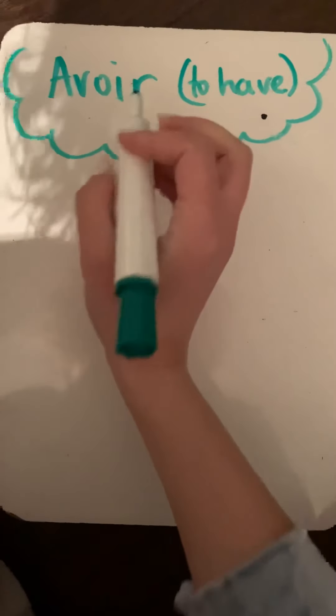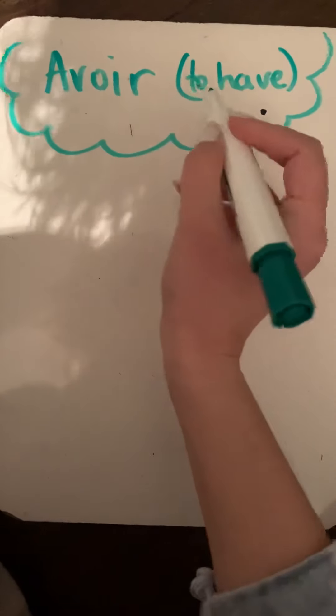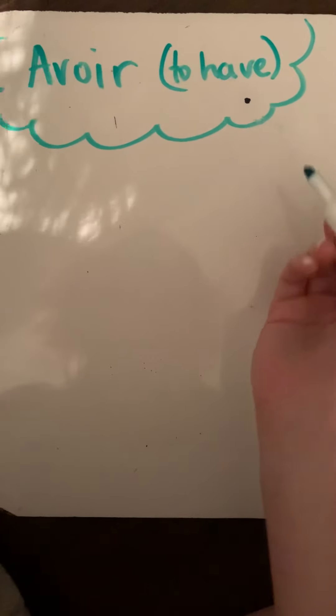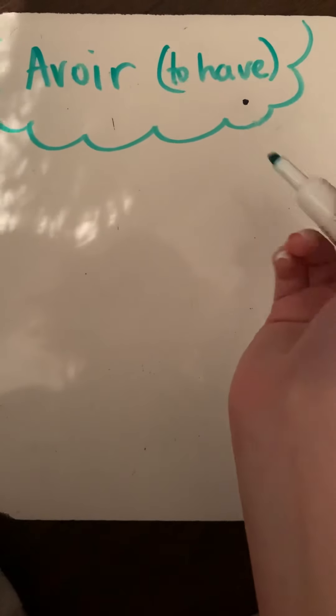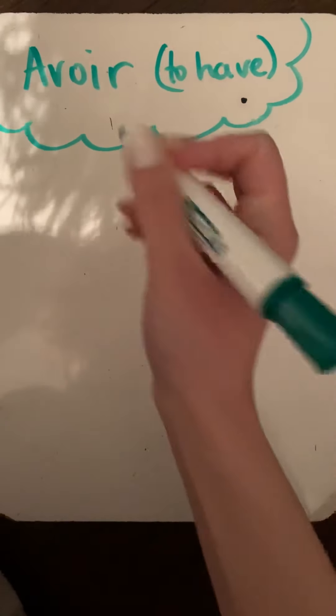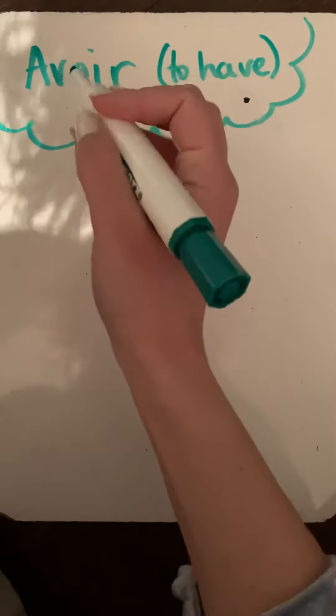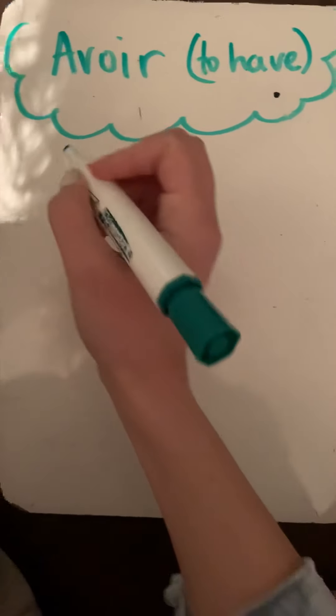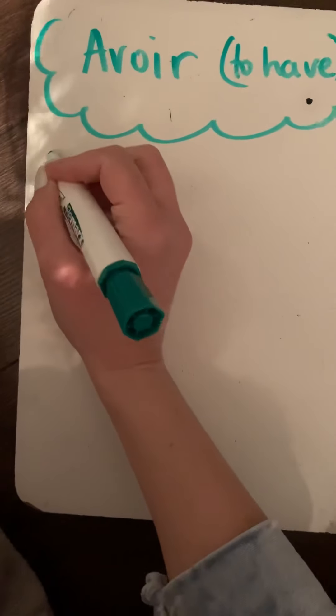So avoir means 'to have,' but just like in English, you don't say 'I to have a dog' or 'you to have a sister.' You conjugate the word to make it fit better in the sentence.